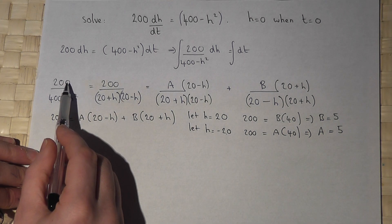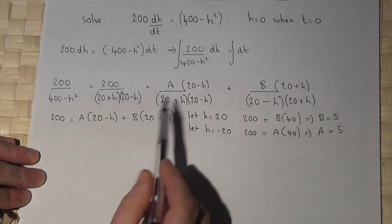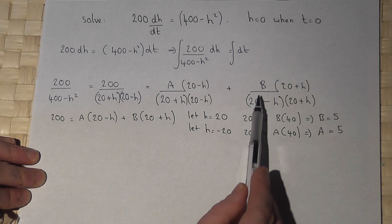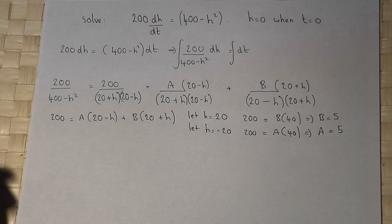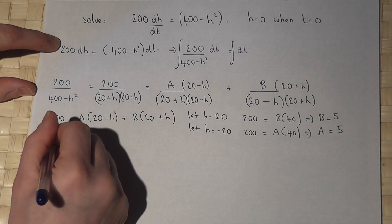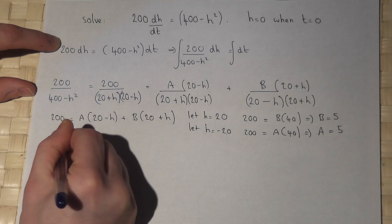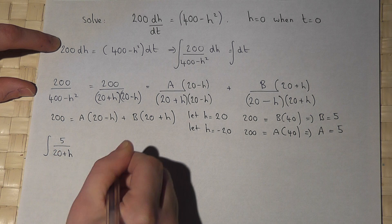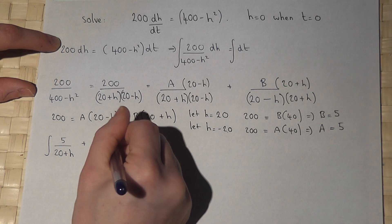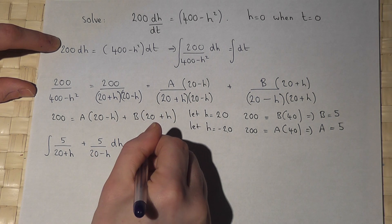So I can write 200 over 400 take away h squared as 5 over 20 plus h plus 5 over 20 minus h. So if I now go back to my original integration, this becomes the integral of 5 over 20 plus h plus 5 over 20 minus h dh equals integral dt.